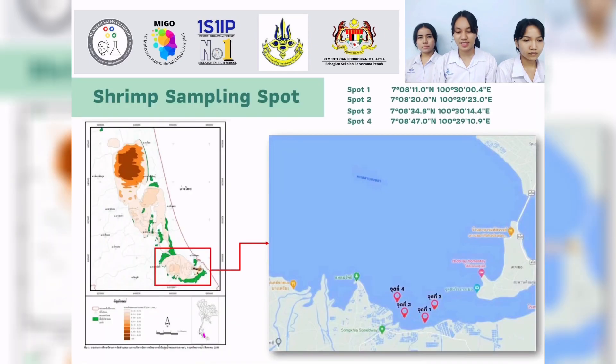This is the map of Songkha Plain Lake. And these are the four points that we chose to collect shrimp samples in the lower Songkha Plain Lake.